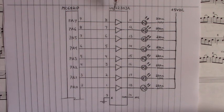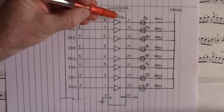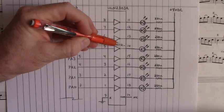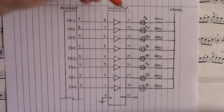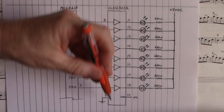Now the output of each Darlington transistor would be labeled C. So here we have on pins 11, 12, 13, 14, 15, 16, 17, 18, all collector outputs of the Darlington transistors inside this IC.